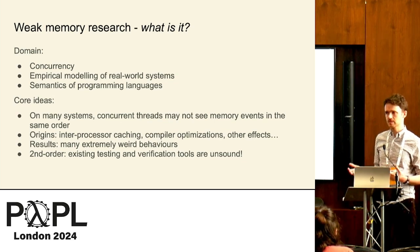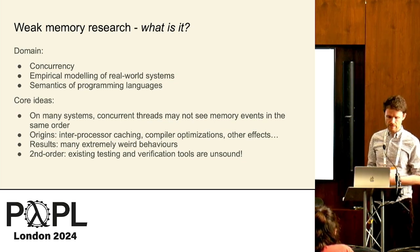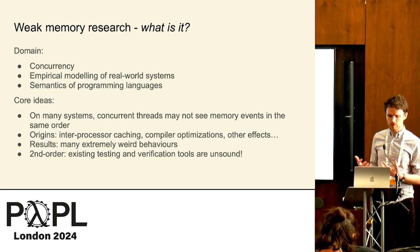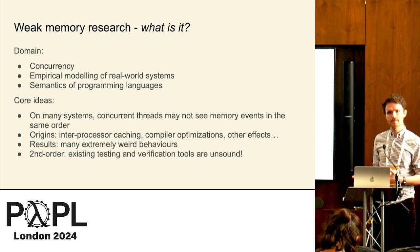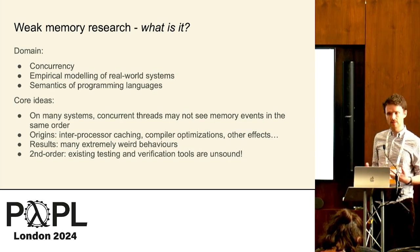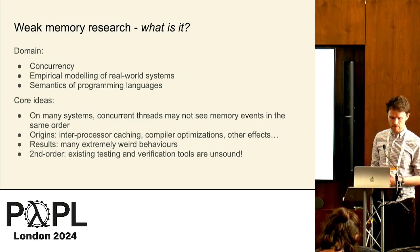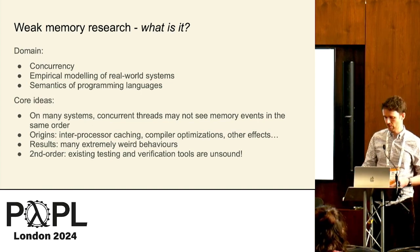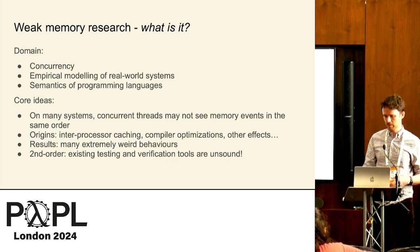Many different threads can see different orders of events. The origin of this is inter-processor caching, compiler optimization, and some other effects. The result is some really weird behavior. And the second-order effect is that lots of testing and verification tools are unsound if you make that assumption.